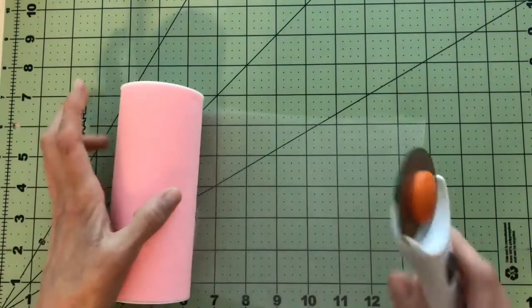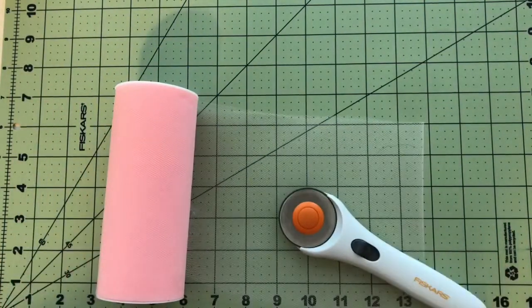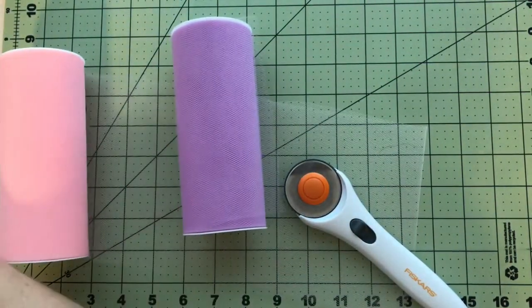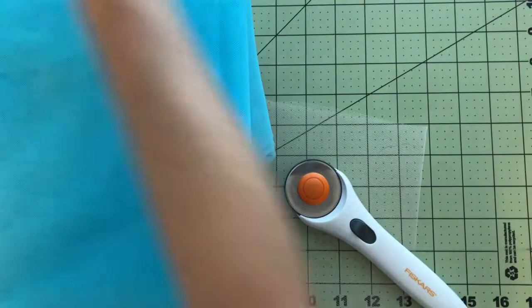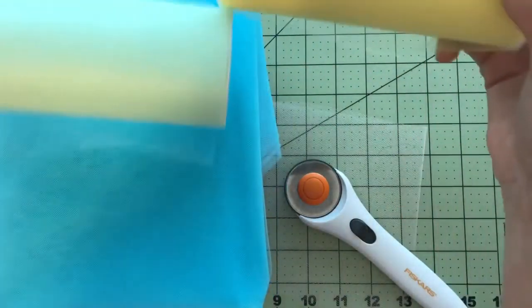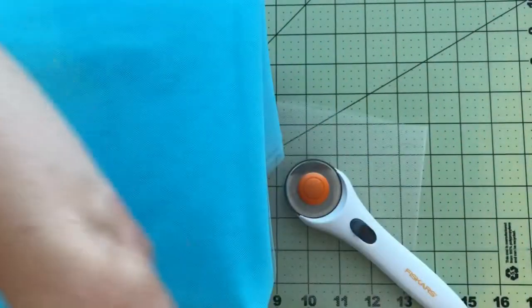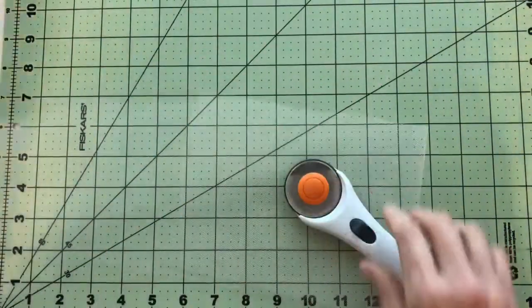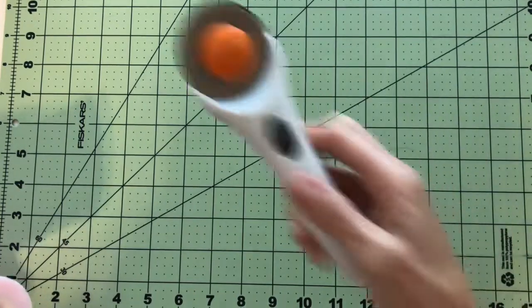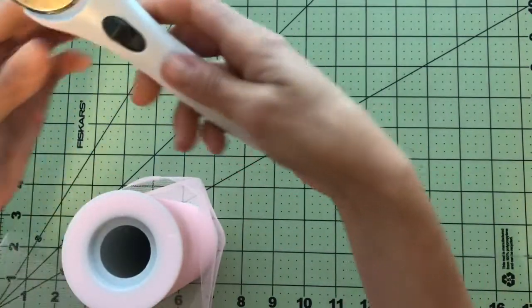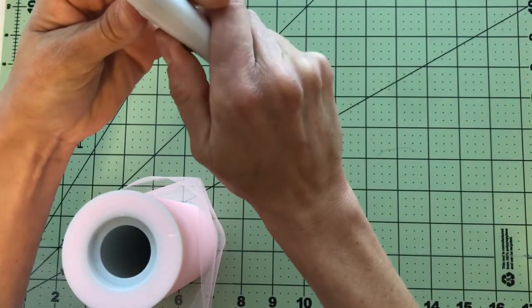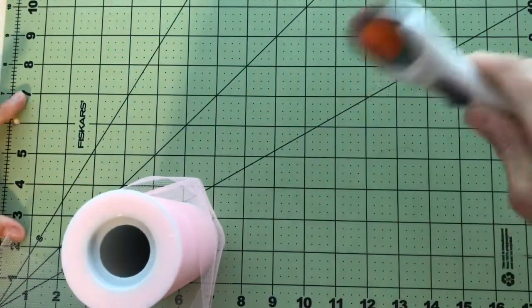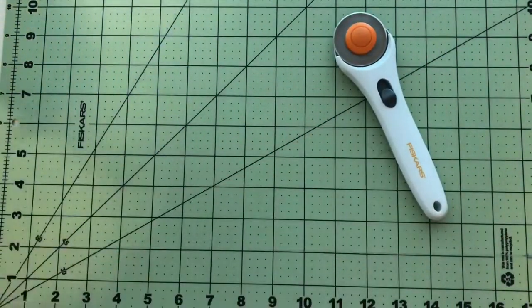I have my colors of tulle. For my unicorn, I do the pastel rainbow. So I have pink, purple, blue, green, and yellow. I have my cutting mat and my Fiskars tool here. It has a blade with a retractable cover, and I can use this to measure and cut the tulle.